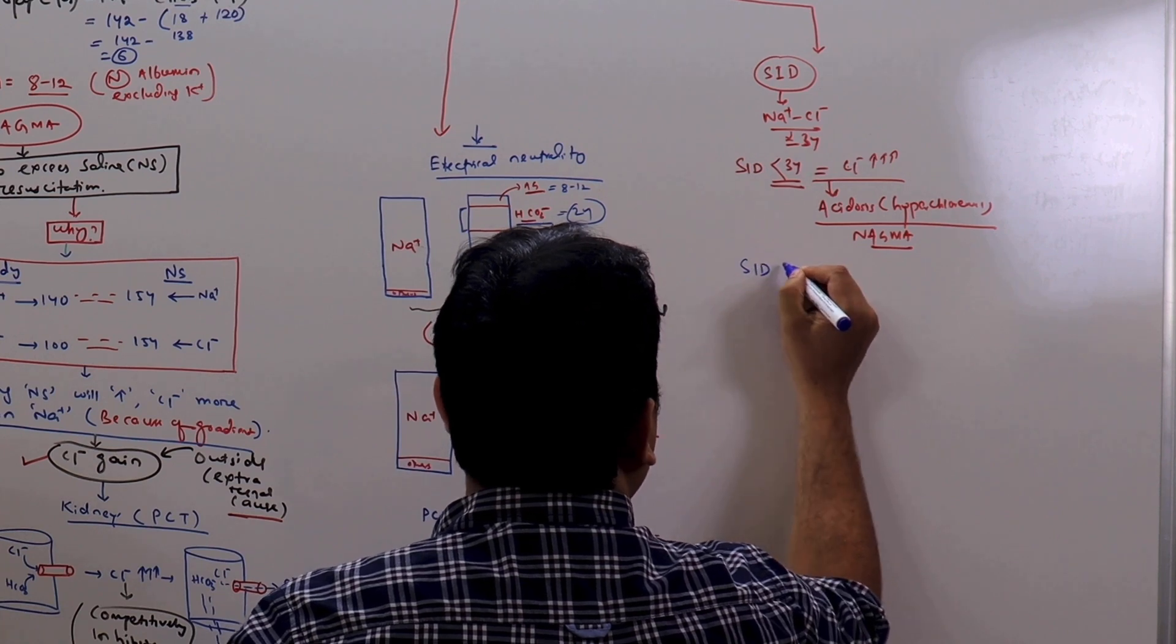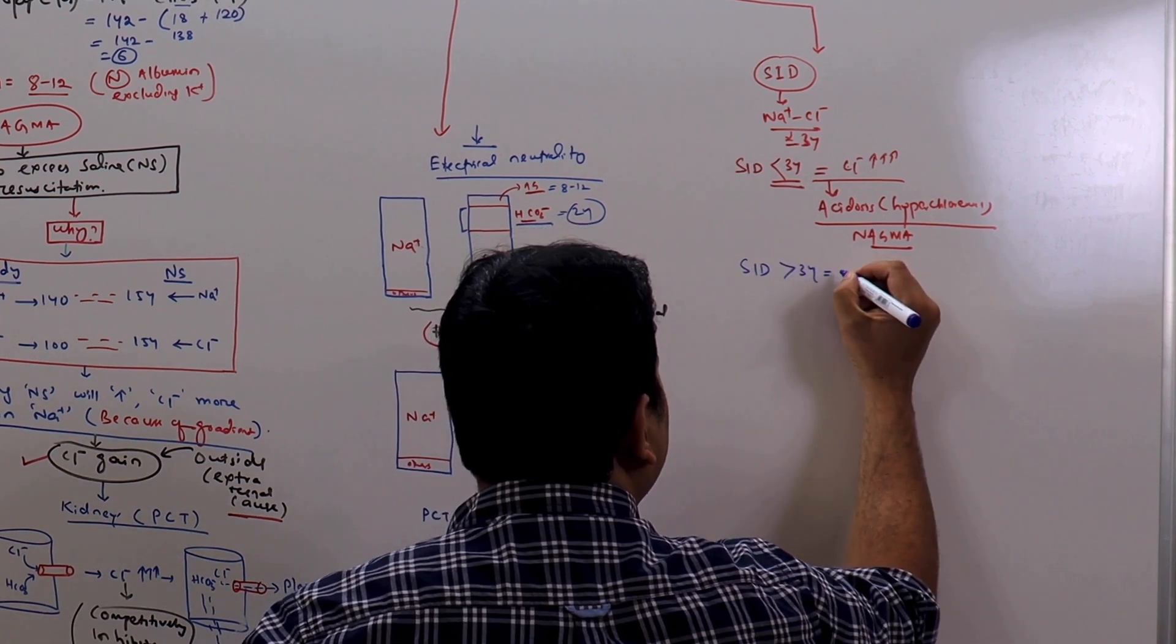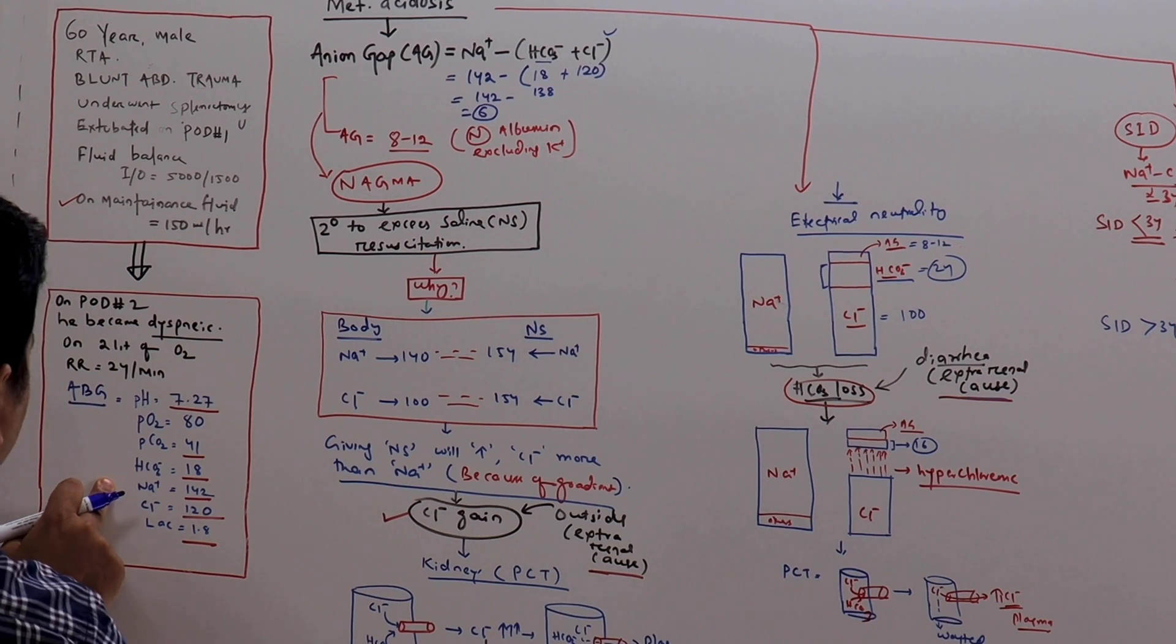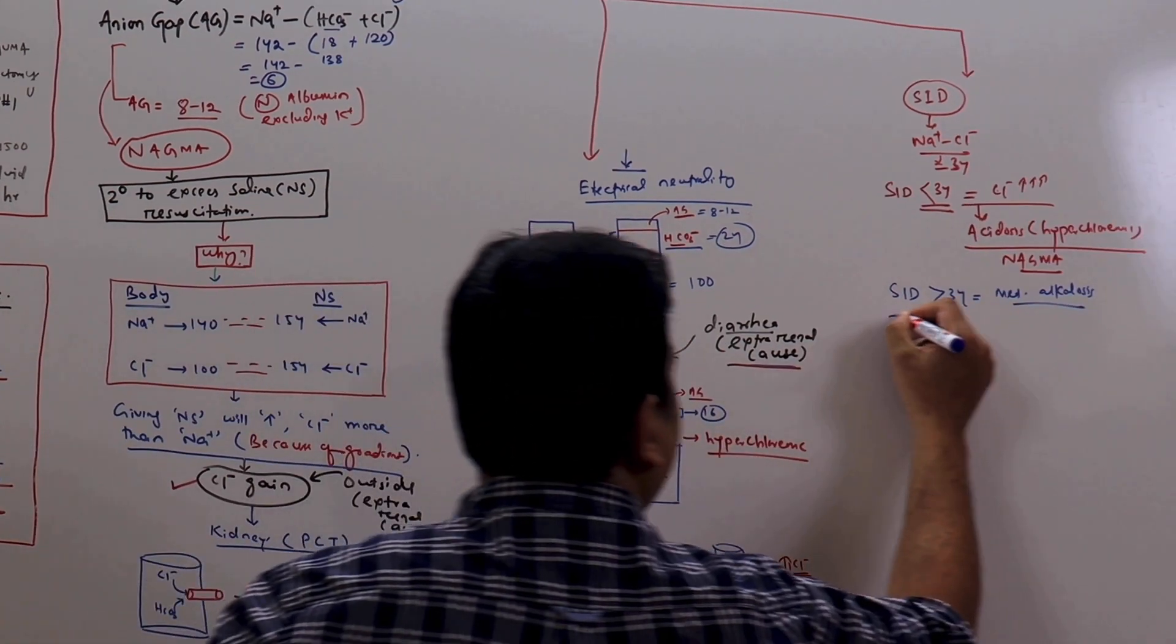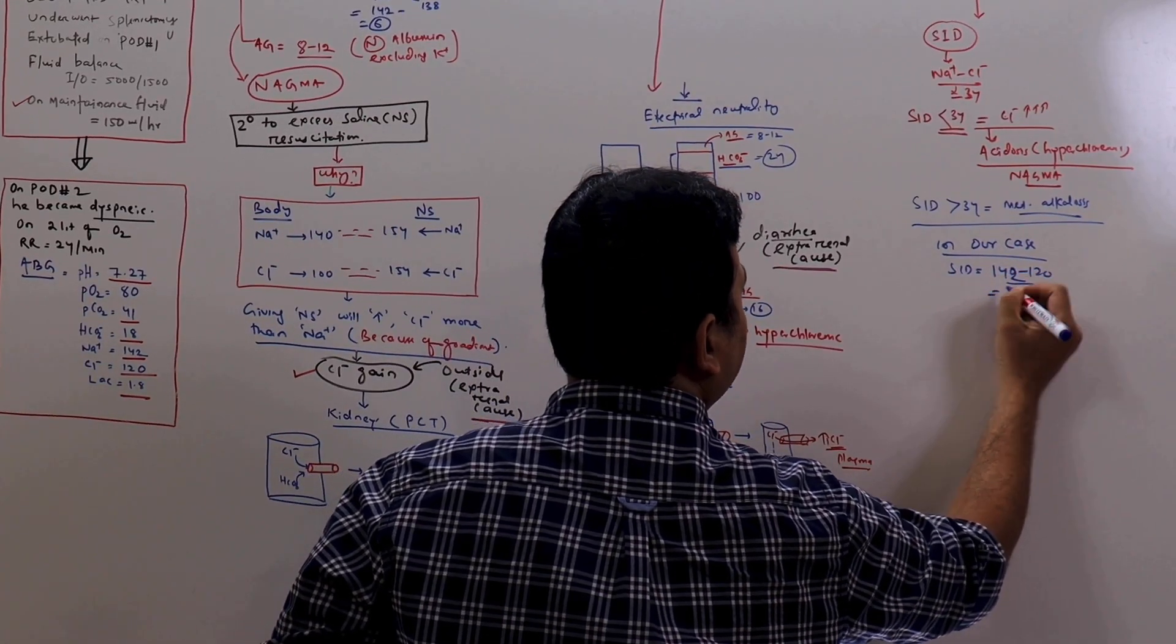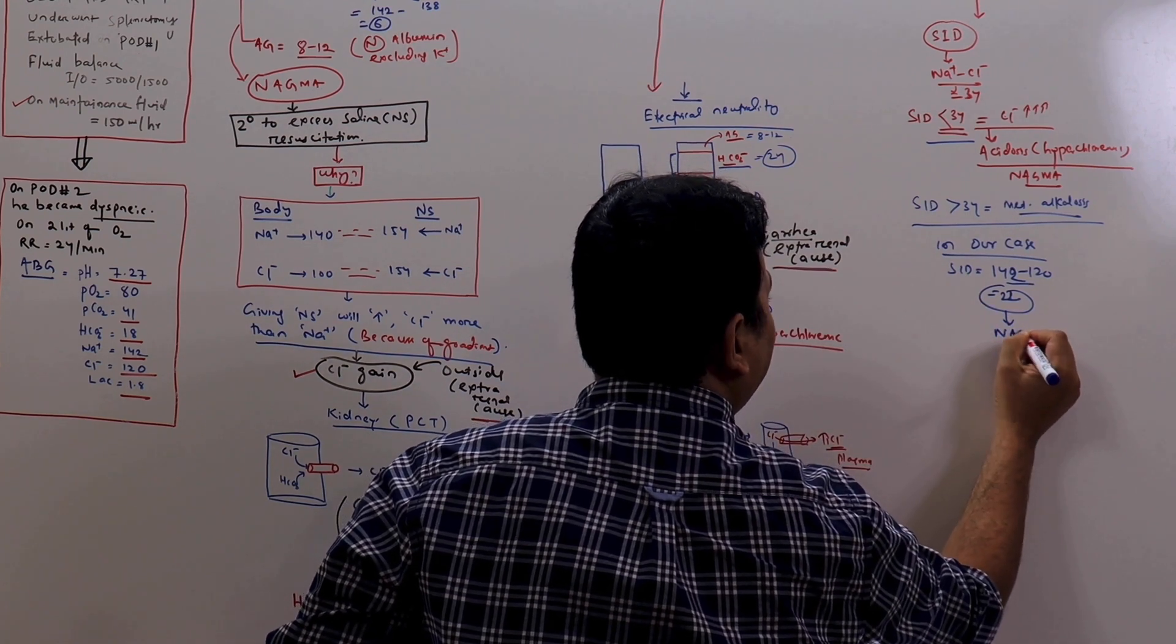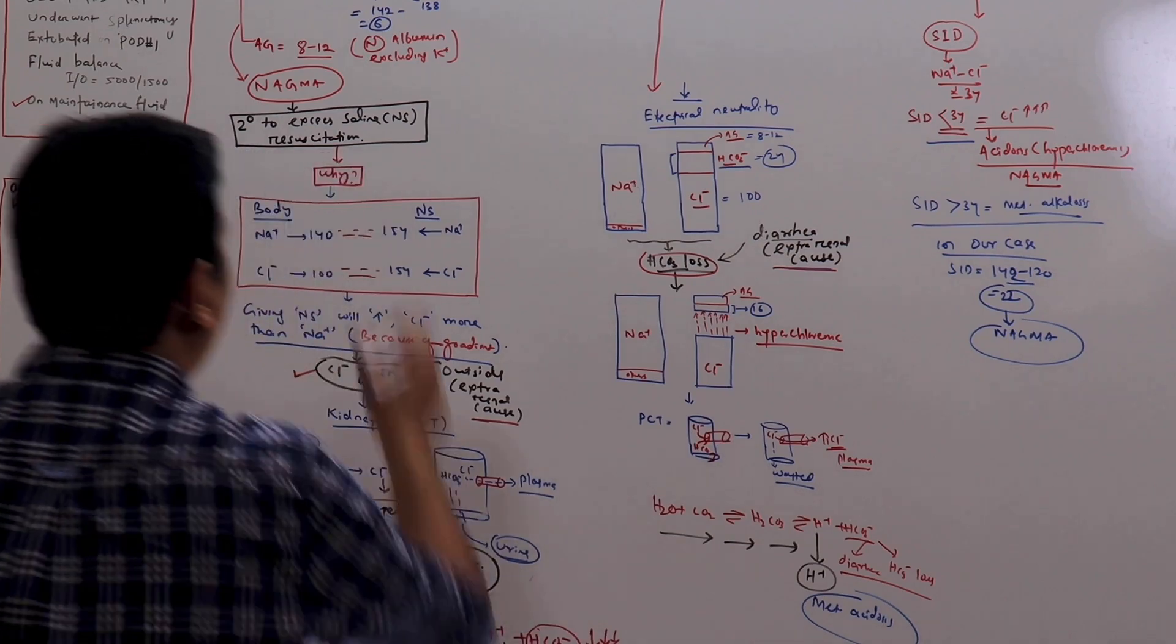Standard ion difference is more than 34, that suggests we have a metabolic alkalosis. In this particular case, you can see sodium is 142, chloride is 120. What is the standard ion difference? It is equal to 142 minus 120, that is becoming around 22 which is less than 34. So the patient is having normal anion gap metabolic acidosis, and the reason and mechanism we have discussed here.